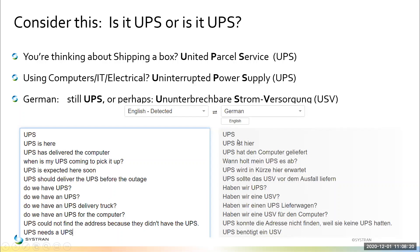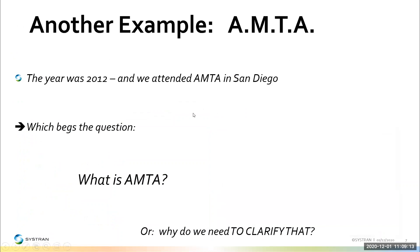Some of our translation engines detect the correct meaning depending on how much information you provide in the sentence. If you have just UPS, there's not enough information. But in German sometimes it needs to go to USV, and some sentences will contain additional clues. The context will be embedded in those extra words. Therein lies the difficulty — but also the magic — that you can sometimes actually expect the engine to do it right, especially if there are clues. Even 'a UPS needs a UPS' actually works, which is remarkable for neural machine translation.